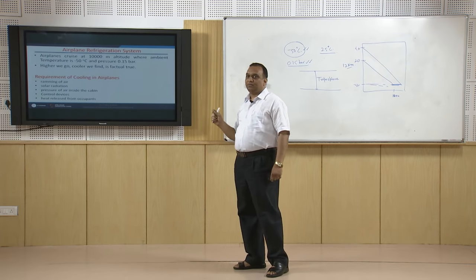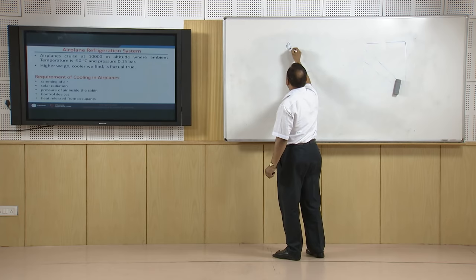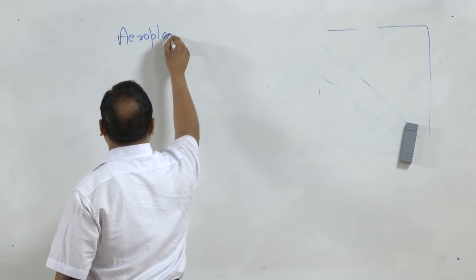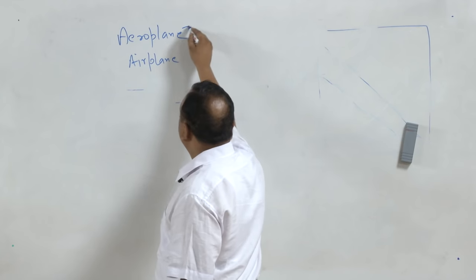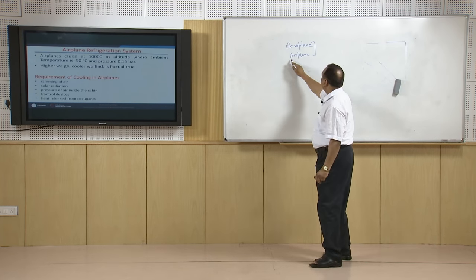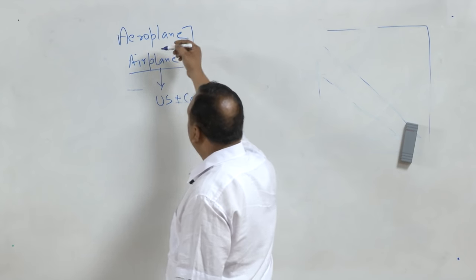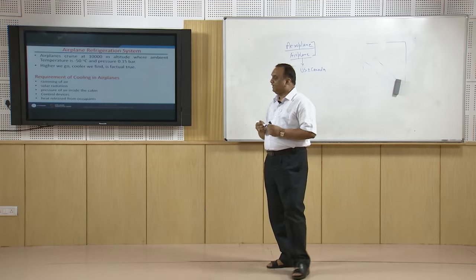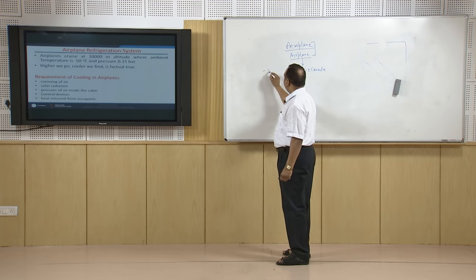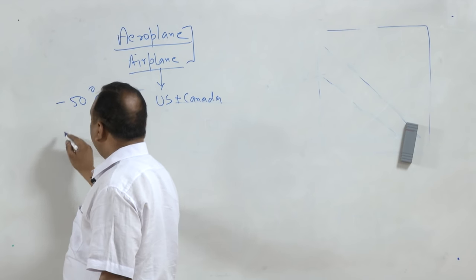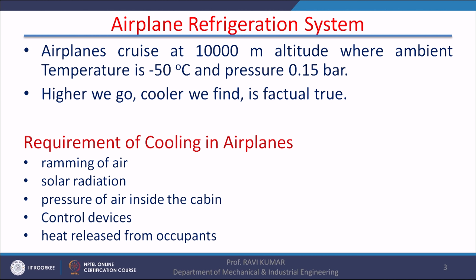Now, for the air conditioning of an airplane — in some parts of the world it is called aeroplane and in others airplane, both are the same. This terminology 'airplane' is mostly used in the US and Canada, while the rest of the world uses 'aeroplane.' Whether it is an airplane or aeroplane, the question is whether cooling is required, because the temperature is minus 50 degrees centigrade where it is moving. Cooling is definitely required for an aeroplane, and there are certain reasons.